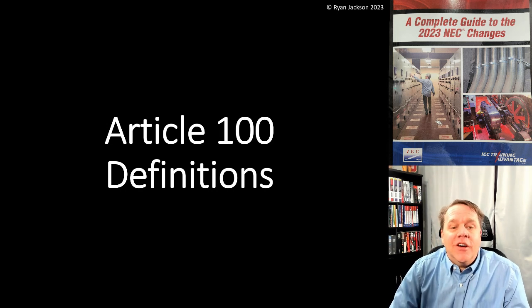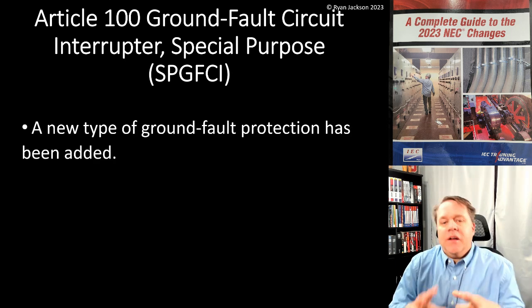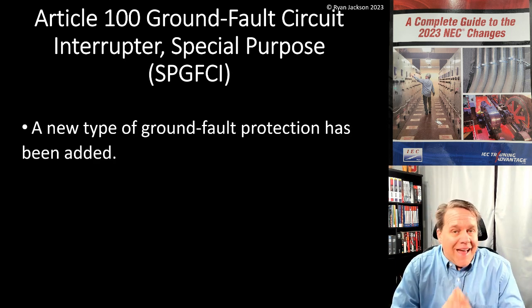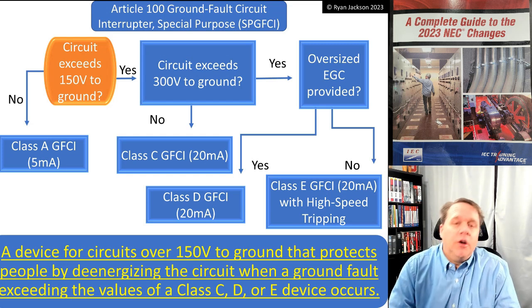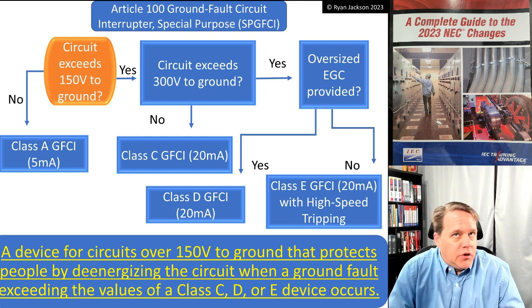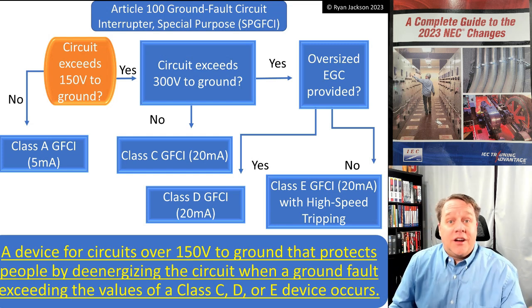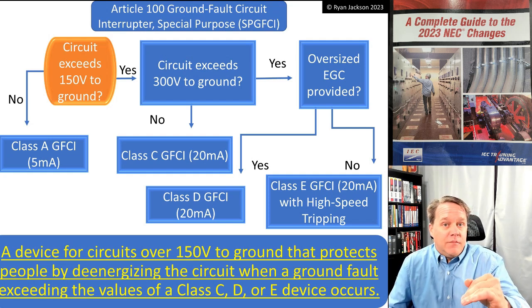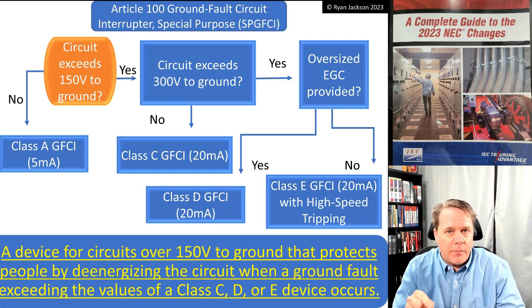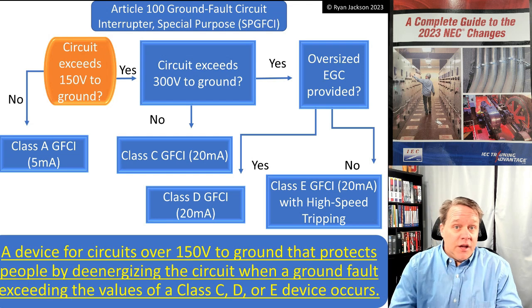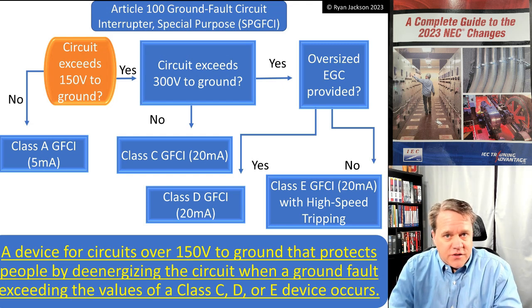The next definition we're going to talk about is Article 100 — ground fault circuit interrupter, special purpose, or SP-GFCI. This is a new type of ground fault protection added to the 2023 NEC. If you go back to Article 100 and read the definition of a GFCI, you'll find it's a device that opens when ground fault current exceeds six milliamps but does not open when it's less than four milliamps — that's a Class A device, which is what we've been using historically.